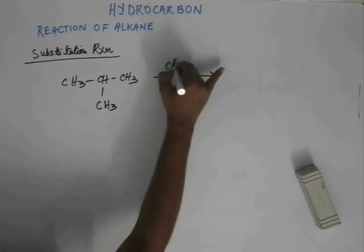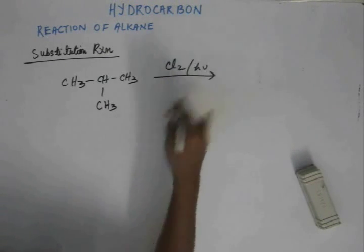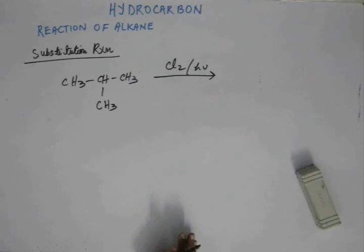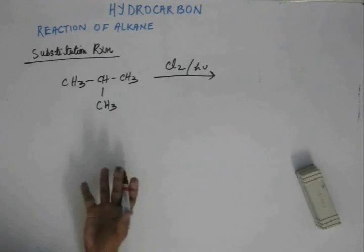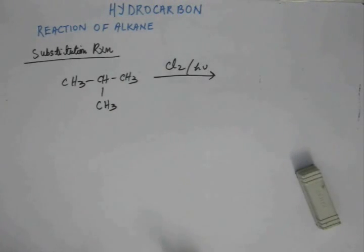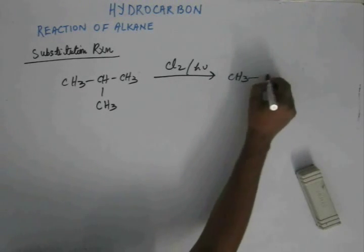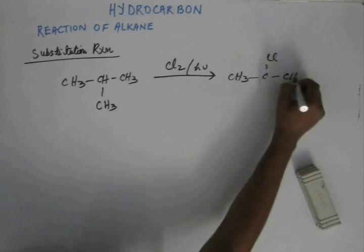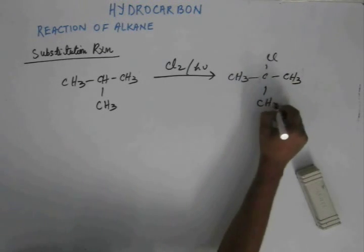Now I can give you another similar kind of problem and you should try it yourself. Now if I give you another same reaction, the question remains same. Again I ask you to identify the products and their percentage. Then again there are two kinds of sites: one degree and this is three degree. So there will be two possible products.